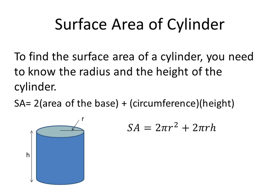And then plus the circumference, which is 2 pi r, and then the height. And you multiply it by the height, which is the height of the cylinder. So the final formula for surface area is 2 pi r squared plus 2 pi r h.